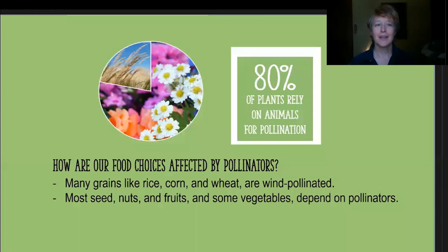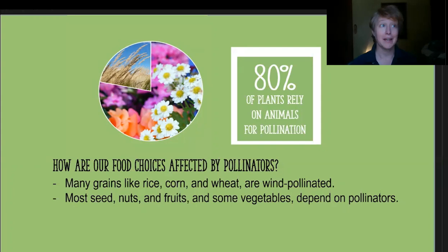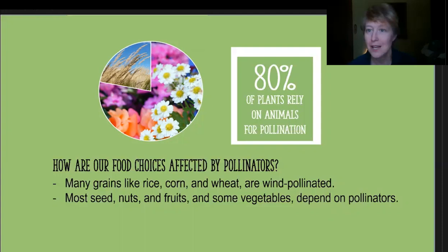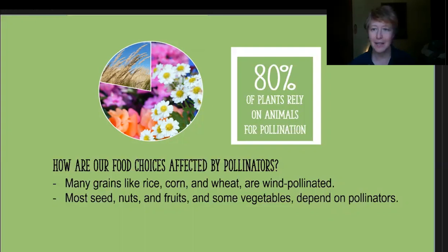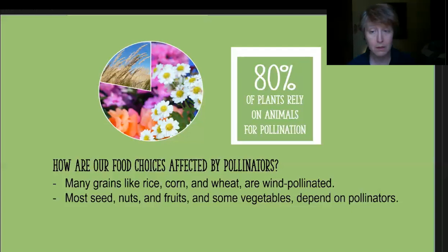The pollinator plate activity starts with some information about pollinators. The idea behind this whole activity is to look at how our food choices are affected by pollinators. We know that about 80% of flowering plants rely on animals for pollination, and you may have heard the saying that one out of every three bites of food relates back to the action of pollinators. There are lots of grains like rice, corn, and wheat that are wind pollinated and not depending on animals, but most seeds, nuts, fruits, and some vegetables do depend on pollinators.